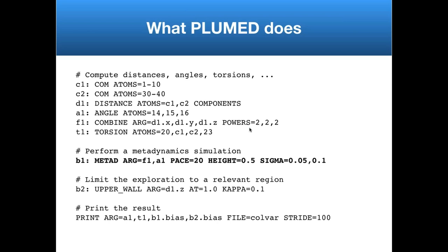To illustrate the sorts of things Plumed can do, here is an example Plumed input file. Each line is one Plumed action. We have actions that do various different things — some calculate centers of mass, distances, and various collective variables, while others calculate a simulation bias. Each action has an associated label. For example, the first line reads 'C1: COM ATOMS=1-10', which calculates a center of mass, and later in the input file the symbol C1 refers to that center of mass.